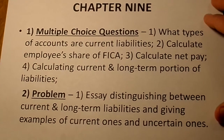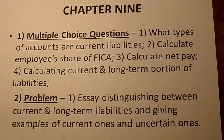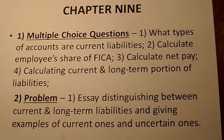There are a number of questions that come from Chapter 9 on the test. First of all, what types of accounts are current liabilities? You might get which one of these is a current liability or which one is not a current liability. You'd have to be able to calculate the employee's share of FICA.